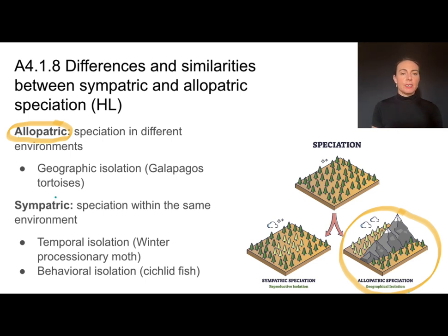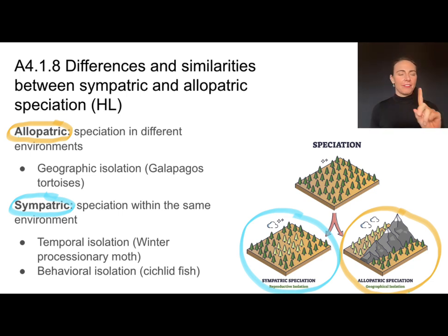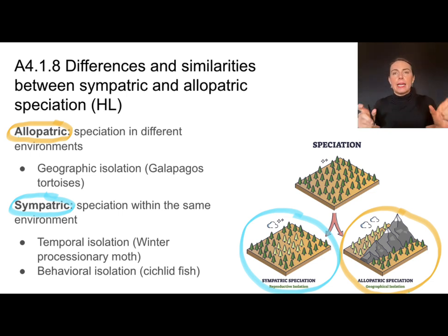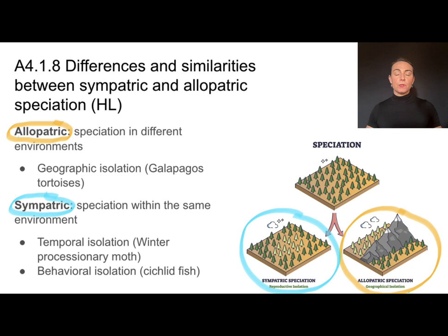Sympatric speciation does not involve a physical barrier. It causes a separation between two populations, but not physically. That can be temporal isolation, which is when things happen at a different time — that's where we get the word 'tempo' from. A great example is the winter processionary moth, which breeds at different times. If organisms breed at different times, they're not breeding together, and eventually that could lead to speciation due to reproductive isolation.